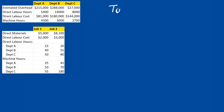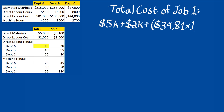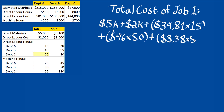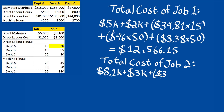Now using these departmental rates, we can determine that the total cost for job 1 is the direct materials cost plus direct labor cost plus the sum of all the departmental rates times the hours for each department, giving us a total cost for job 1 of $12,566.15. Similarly, the total job order cost for job 2 is $19,224.60.